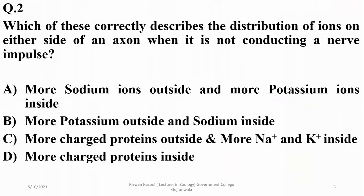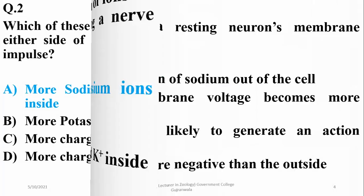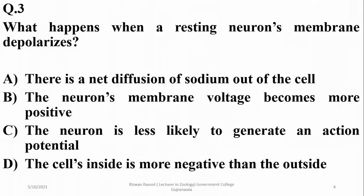Which of these correctly describes the distribution of ions on either side of an axon when it is not conducting an impulse? During the resting or non-conducting stage, there are more sodium ions on the outer side of the neuron, and potassium ions are always higher on the inner side. So alpha is the right option.